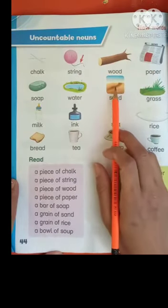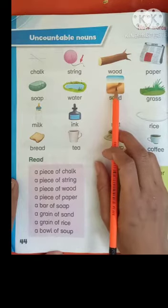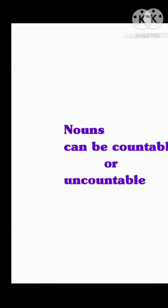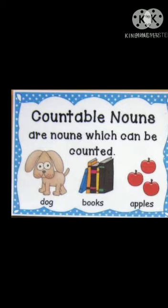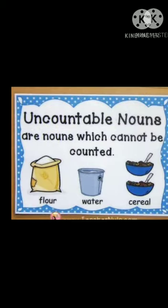Students, firstly I will tell you about countable and uncountable nouns. Nouns can be countable or uncountable. Countable nouns are nouns which can be counted — like dog, books and apples. These are countable things. And uncountable nouns are nouns which cannot be counted — like flour, water and cereal. These are uncountable nouns.